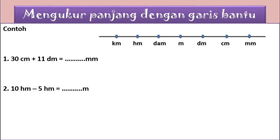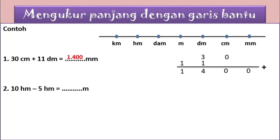30 cm berarti nolnya kita letakkan di sentimeter dan angka tiganya mengikuti di depannya. Yang kedua adalah 11 desimeter: angka satunya kita letakkan di desimeter dan angka satu yang di depannya mengikuti. Kalau sudah, kita jumlahkan: nol, empat, dan satu. Karena yang diminta dalam satuan milimeter, berarti di milimeter kita tambahkan nol. Jadi hasilnya adalah 1.400.